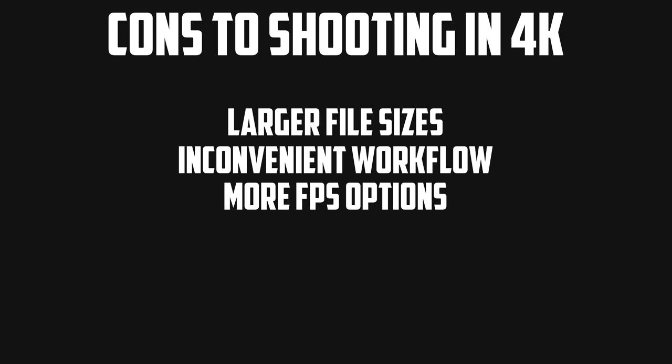Next we have fewer frames per second options when shooting in a higher resolution. If we take the Phantom 4 Pro and shoot in 1080p, we're able to use a frame rate of up to 120, whereas if we shoot in 4K we're only limited to 60 FPS. Although 4K at 60 FPS is a feat in itself, it's nowhere close to being able to slow down footage at 120 frames per second, so if you're looking to shoot slow motion video, you may want to look at 1080p.